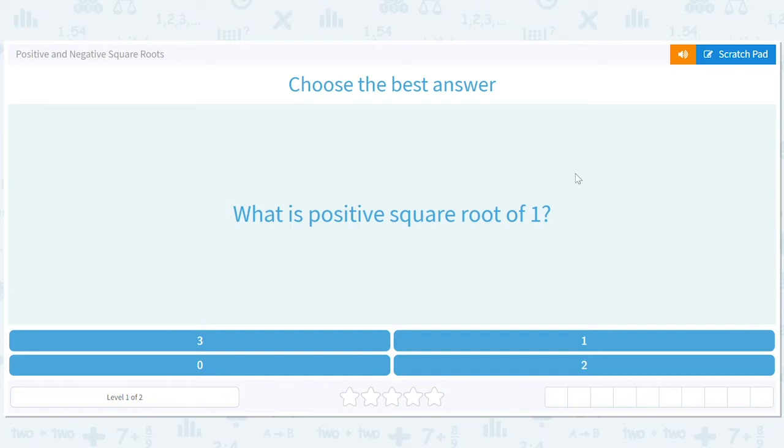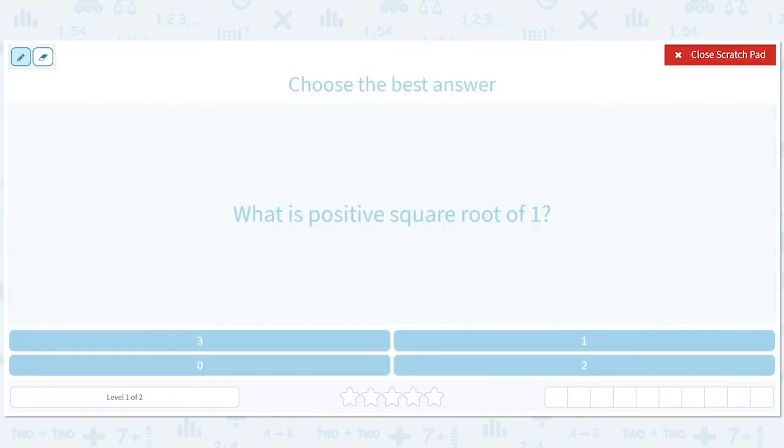What is the positive square root of one? What is the square root? Well, a square root is something that when you multiply it by itself gives you the original answer, the original number in the question.